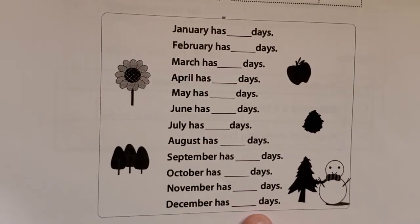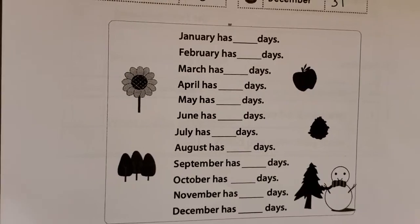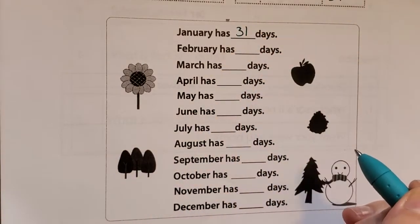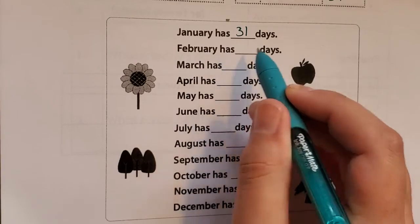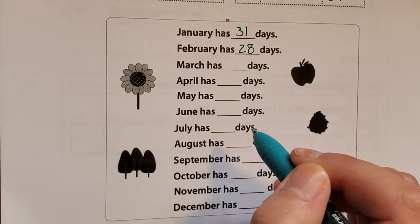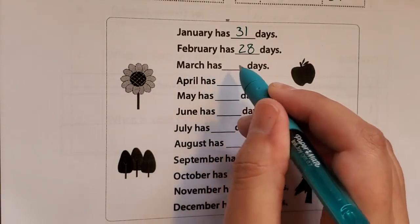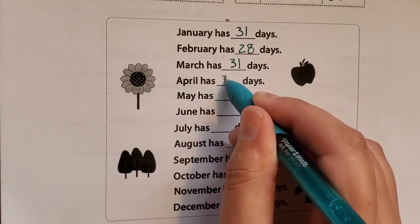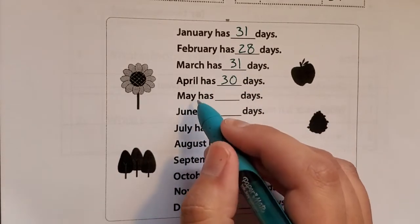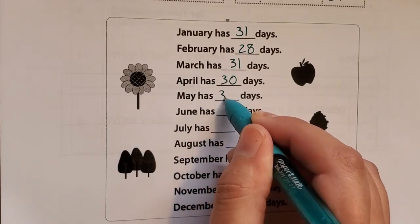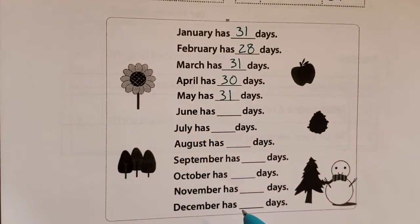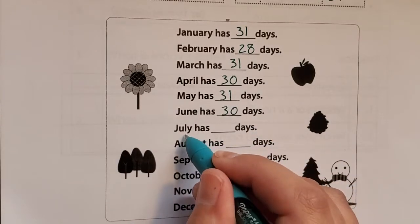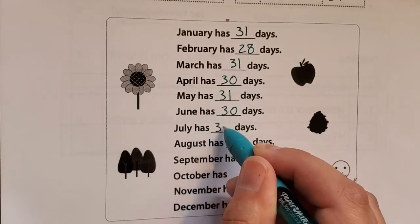Write the number of days in each month again. January has 31 days. February has 28 days. March has 31 days. April has 30 days. May has 31 days. June has 30 days.